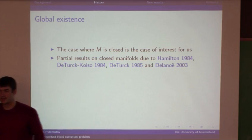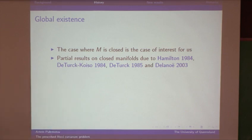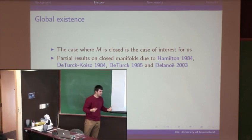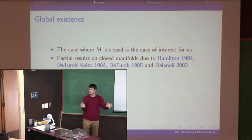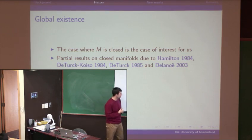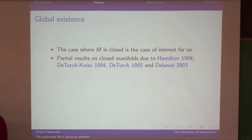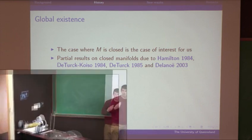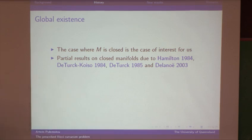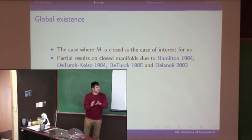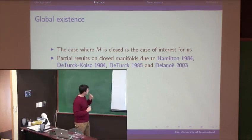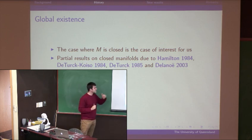That was local existence, but what about global existence? If you have your manifold and the tensor T defined on the whole thing, can you find a Riemannian metric defined on the entire manifold with Ricci curvature T? Global existence is a more difficult question than local existence, and the nature of results depends strongly on whether you have a closed manifold, an open manifold, or a manifold with boundary. The case of interest for us today is a closed manifold.